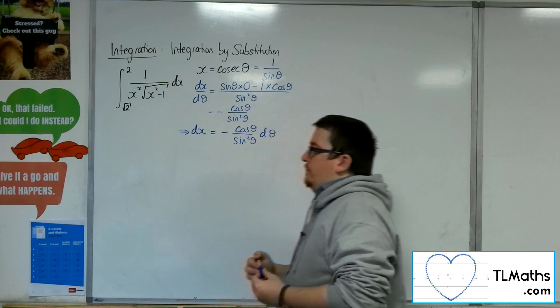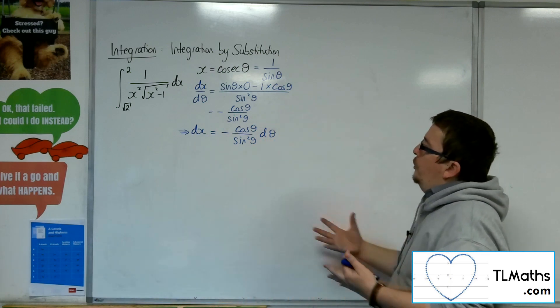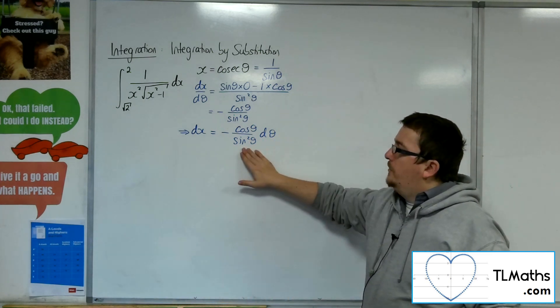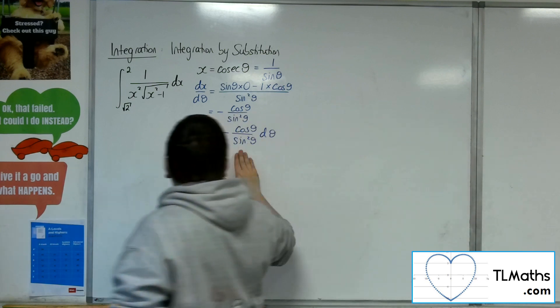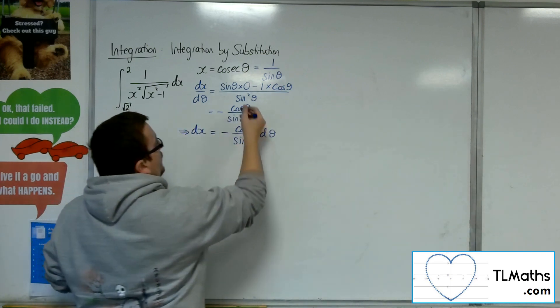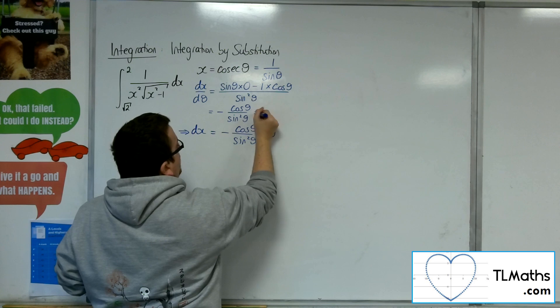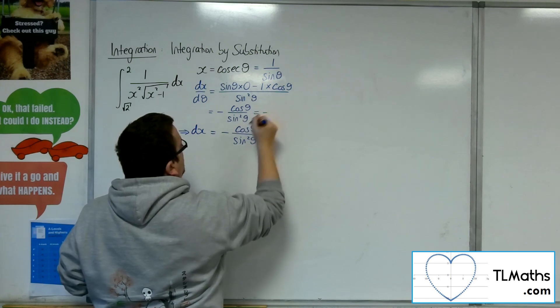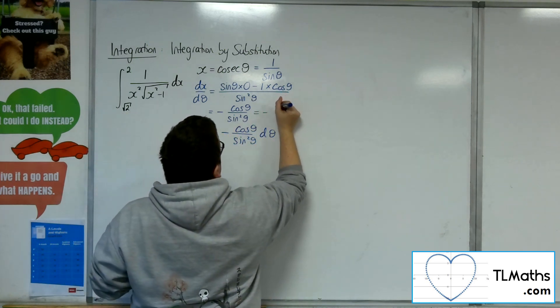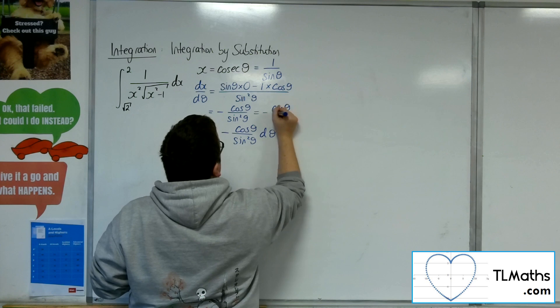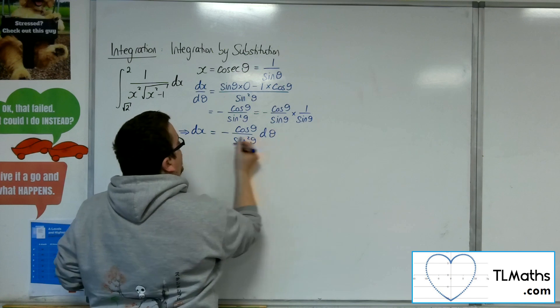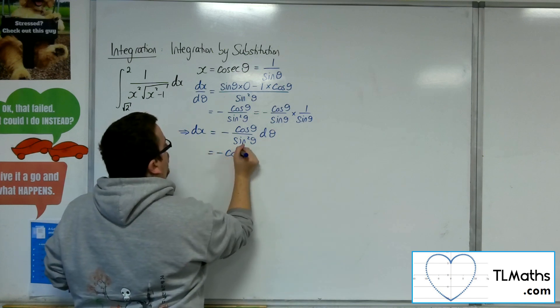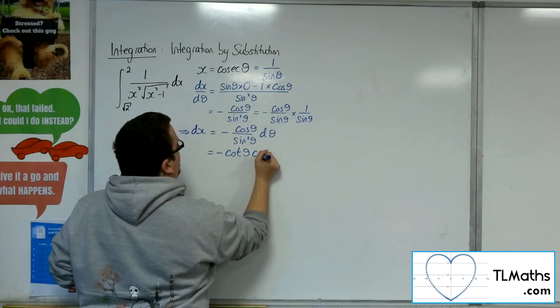Now this could be simplified, this cos theta over sine squared theta. So I'm going to do that. Minus cosine theta over sine squared theta is the same as minus cosine theta over sine theta times 1 over sine theta. So that's the same as minus cot theta cosec theta.